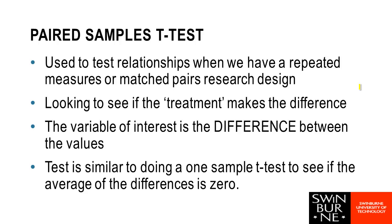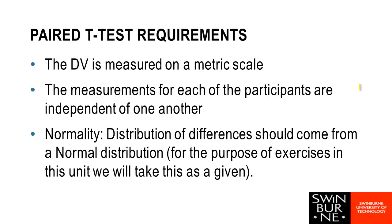In SPSS, we have a separate paired samples t-test analysis that we can do, and when we see the output we'll see that it's very similar. We have a couple of requirements — for this course we're assuming these will always be met, though in practice we would need to check. The first is that the dependent variable is measured on a metric scale. If we're looking at means and differences, it needs to be metric — this is no good for categorical data.